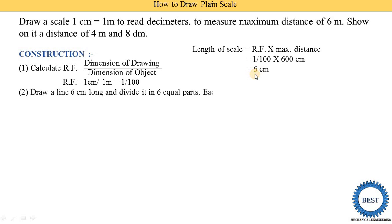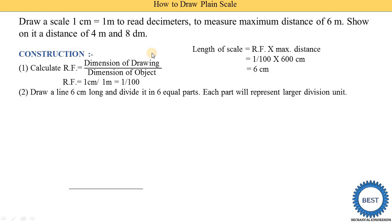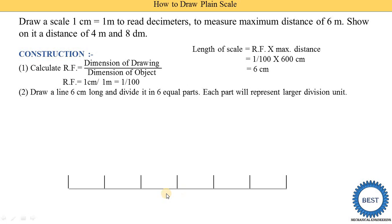Next, we need to draw a 6 centimeter long line. Draw a line 6 centimeters long and divide it into 6 equal parts. Each part will represent the larger division unit. Two units are there: one is the meter and another is the decimeter. So we draw the 6 centimeter long line using a scale and pencil, divide it into 6 equal parts where one part equals 1 centimeter, and then give the numbers: 0, 1, 2, 3, 4, 5.